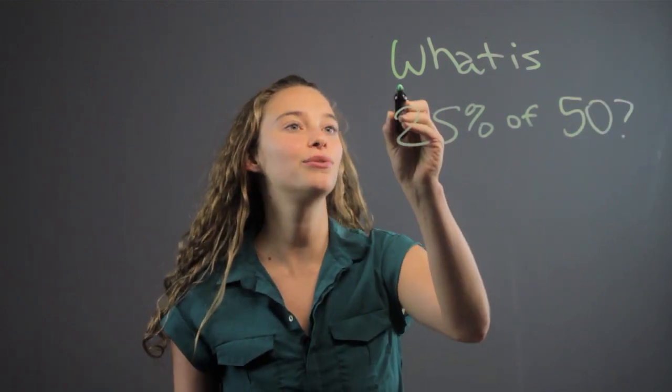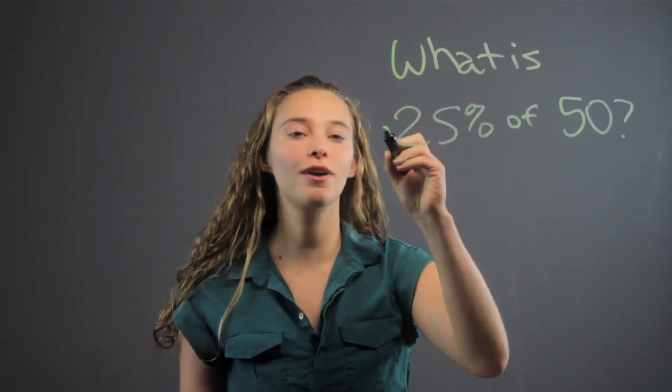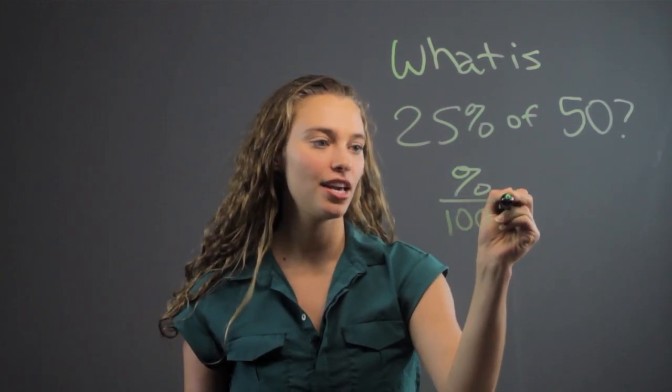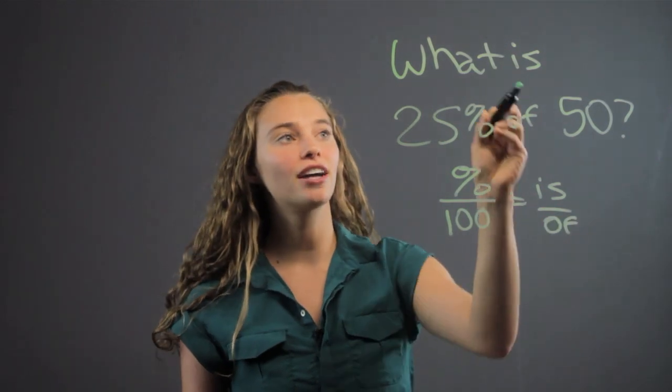Put it as this equation: percentage over 100 equals is over of. So I was always taught to circle what's with the is. The what, there's no number with the is, it's a what, that's the question mark, that's the unknown.